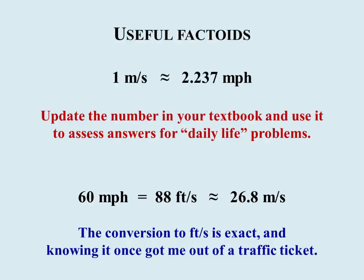Now, on the useful factoid side, the fact that 1 meter per second is about 2.237 miles per hour is quite useful. And if you want to actually have a decent 3 to 4 sig fig value, I recommend updating the number in the front cover of your textbook to be 2.237 instead of the rounded value that they give. This is quite useful if you need to convert miles per hour to meters per second for a problem, but it's also nice to assess answers.